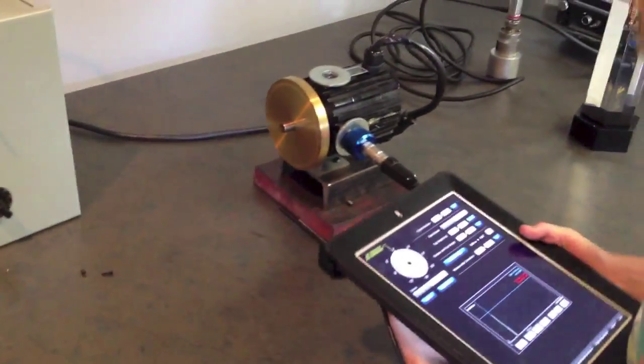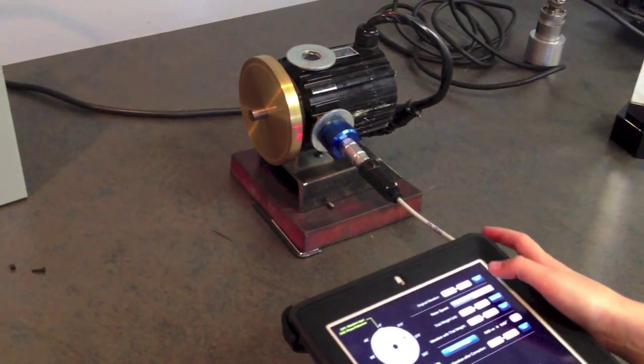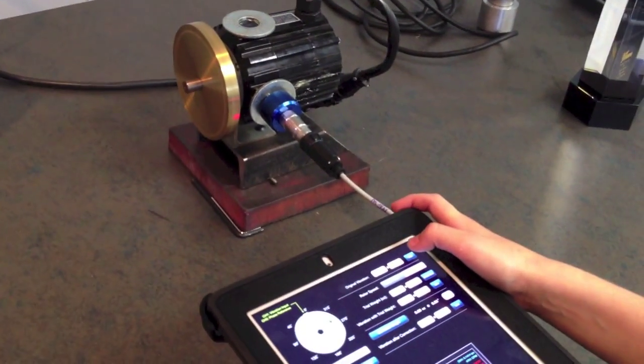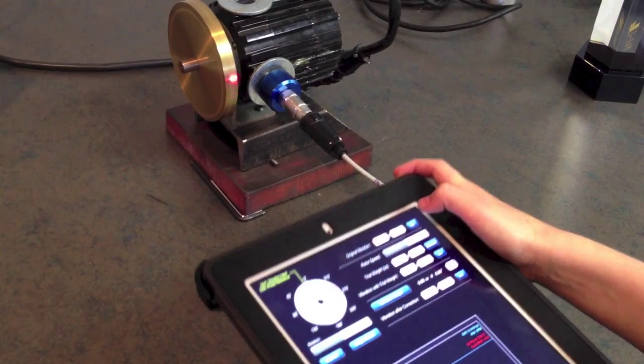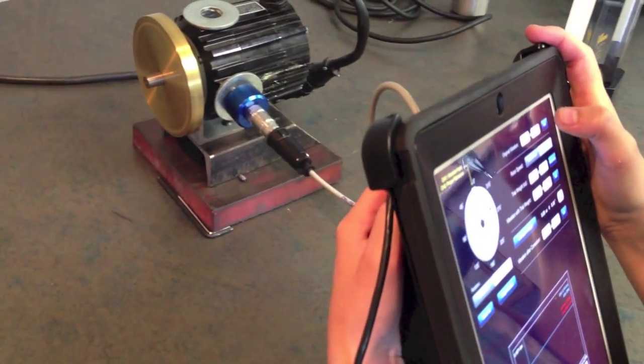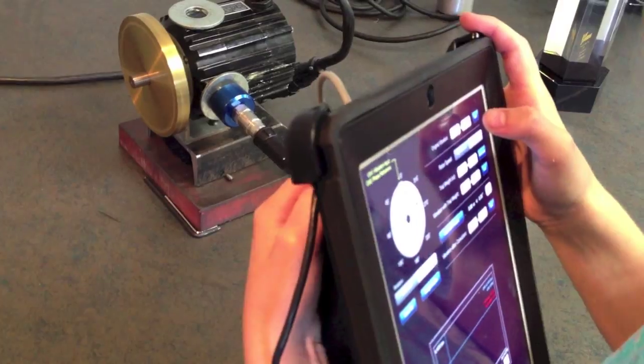Since my motor is already running, I would take my tachometer, line it up with my accelerometer and press get. I'm off by about 0.1 and my heavy spot is about 330.